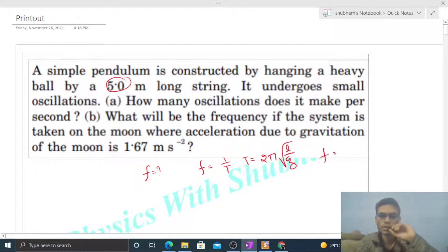So frequency will be 1/(2π)√(g/l). Now g is 9.81 and length is given as 5 meters. You can put the values and find out the frequency.